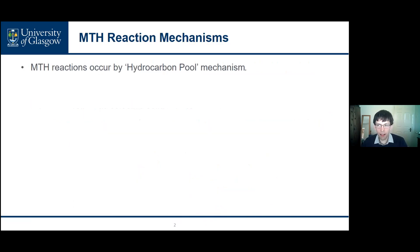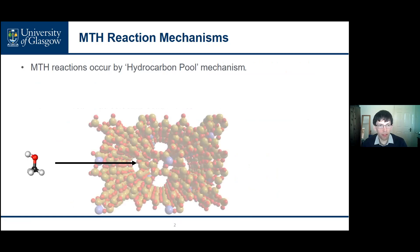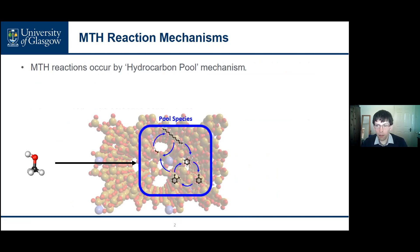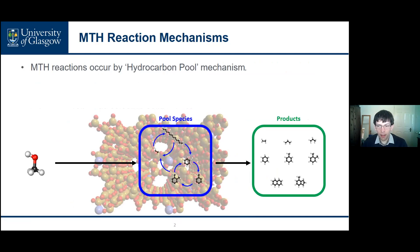The MTH reaction itself is complex but is accepted to proceed by a hydrocarbon pool mechanism. On contact with methanol at the reaction temperature, a population of hydrocarbons builds up within the zeolite and is continually cycled through multiple oligomerization, cracking and aromatization reactions, producing a pool whose composition is determined by the catalyst selectivity and the reaction conditions. Portions of this pool which are small enough to diffuse through the pore network can be released as products, and the pool is regenerated by incorporating additional methanol through methylation reactions.